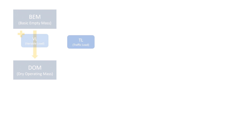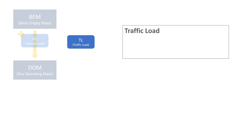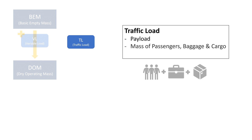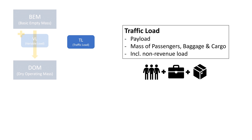This is where the traffic load, also known as payload, comes into play. It's the mass of all passengers, luggage and cargo combined. It also includes non-revenue loads — like for example an airline transporting spare parts on their own flights. It's very useful to them, but they won't be earning any money.